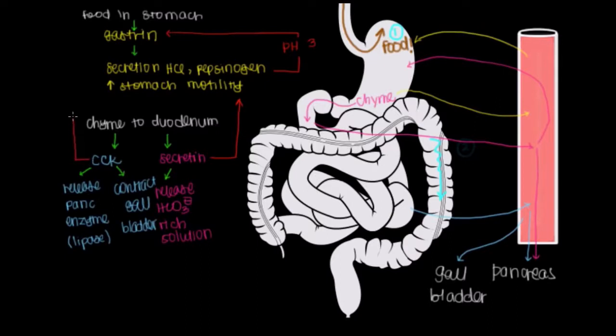And lastly, the other thing that cholecystokinin does is that it comes back here, and decreases our stomach motility. We want to slow down the release of our chyme from the stomach, because we need some time to process what we already have in here. Now, is it plain old chyme that causes our cholecystokinin and our secretin to be released into the bloodstream? Or is it something more specific in the chyme?